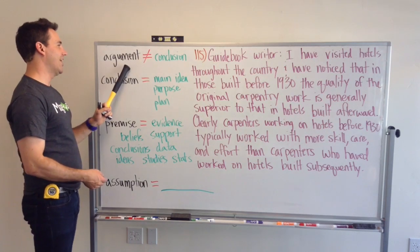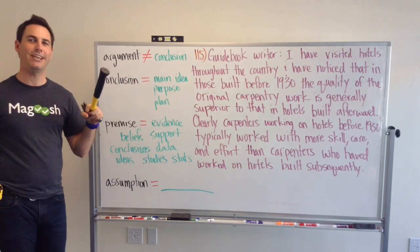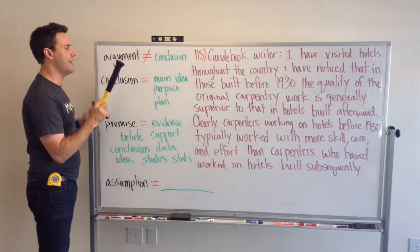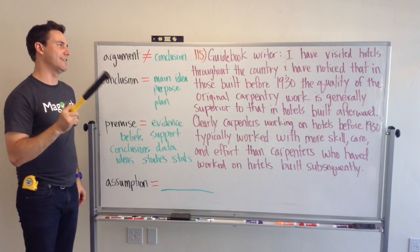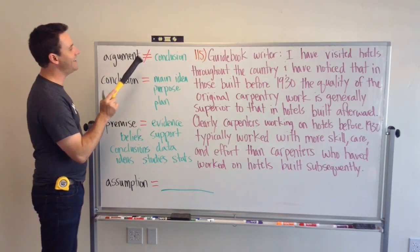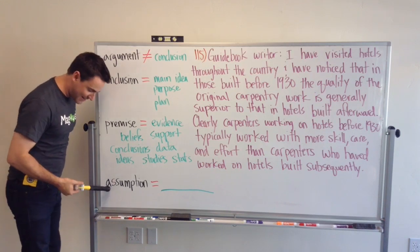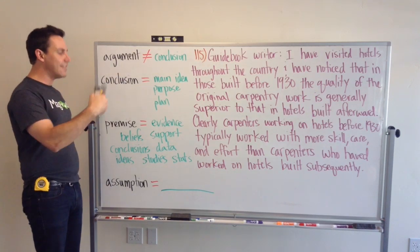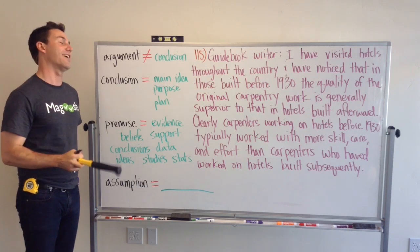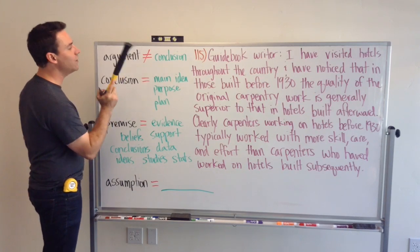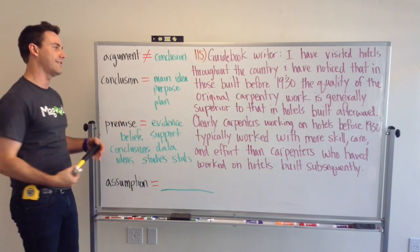Let's get started. An argument is not a conclusion — those are two different things. I see students sometimes say argument and conclusion to mean the same thing, but they are different. An argument contains a conclusion, and it contains a premise, and it contains assumptions. Everything that's there is the argument — it's all of this stuff. The conclusion is only one piece of the puzzle. It's an important part of the puzzle, but it is not the puzzle itself.